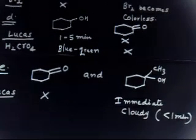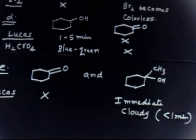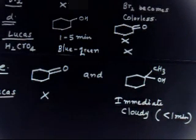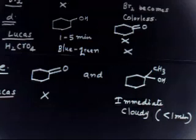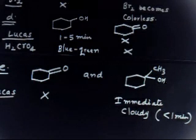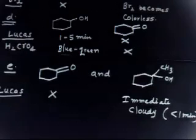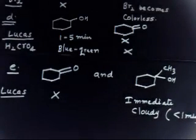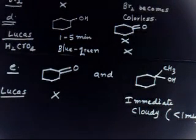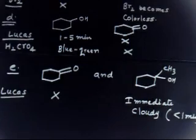In summary: if you have a primary alcohol, you can use the oxidation method. For a secondary alcohol, also use oxidation. For a tertiary alcohol, use the Lucas reagent. Lucas reagent can test alcohols, and H₂CrO₄ (chromic acid) can also be used — when it reacts with a primary or secondary alcohol, its color turns blue-green. Tertiary alcohols are resistant to chromic acid and cannot be oxidized.